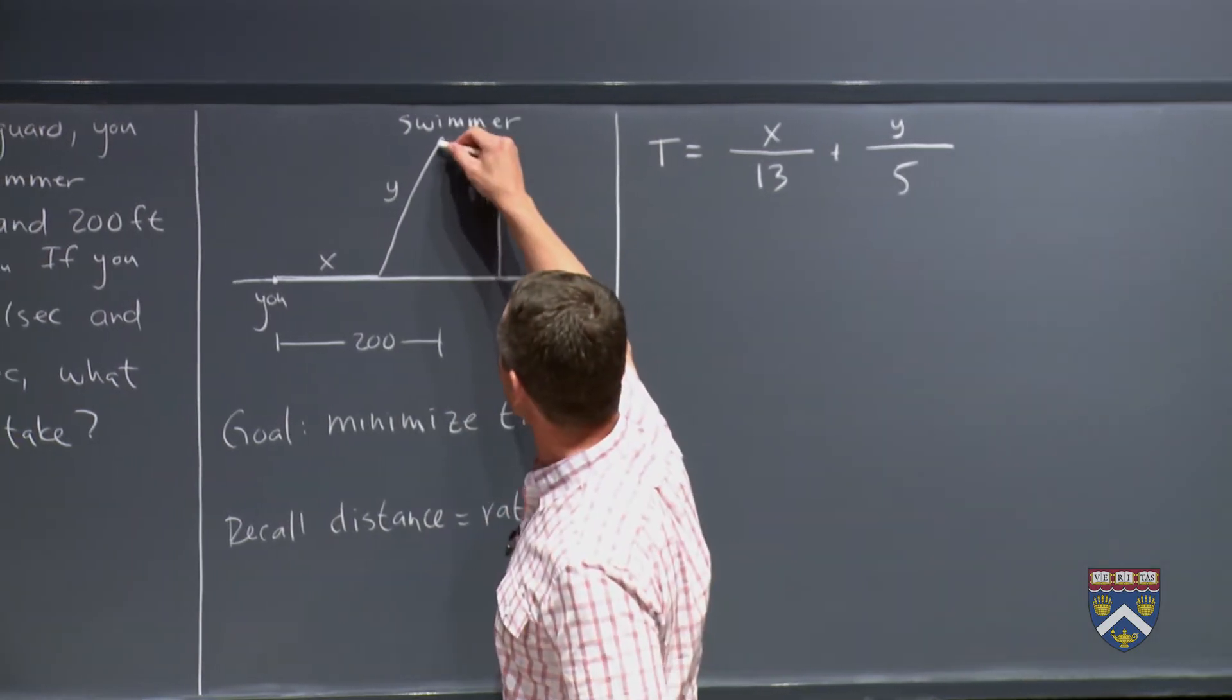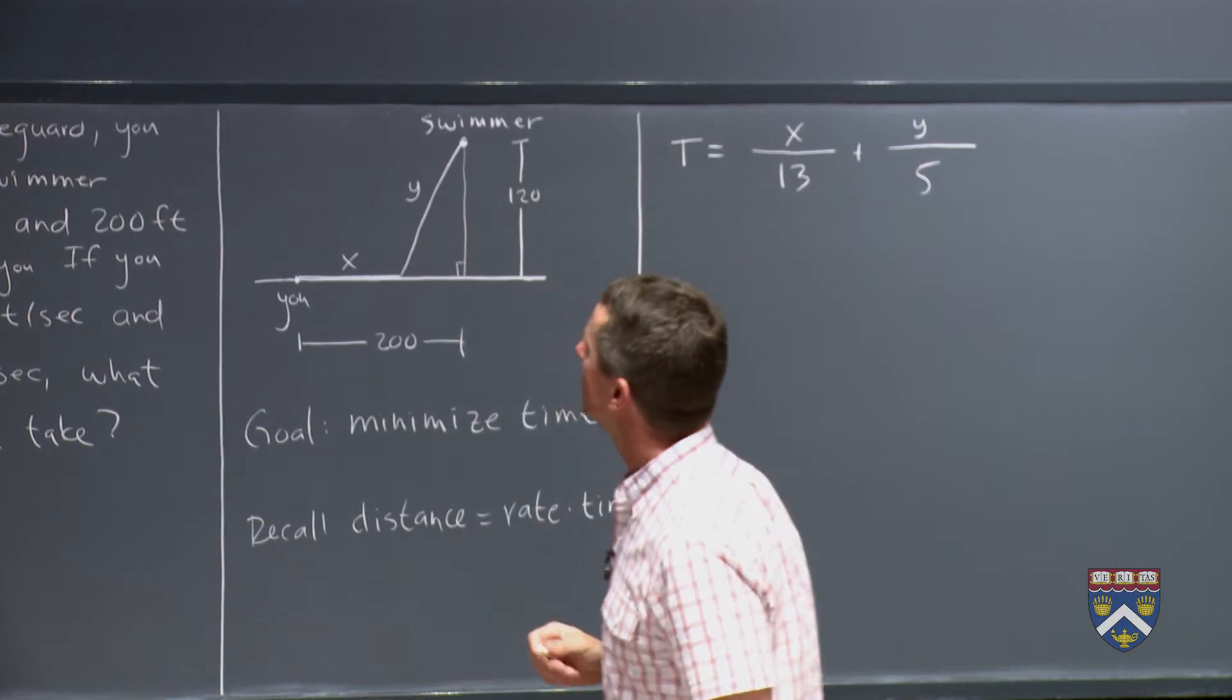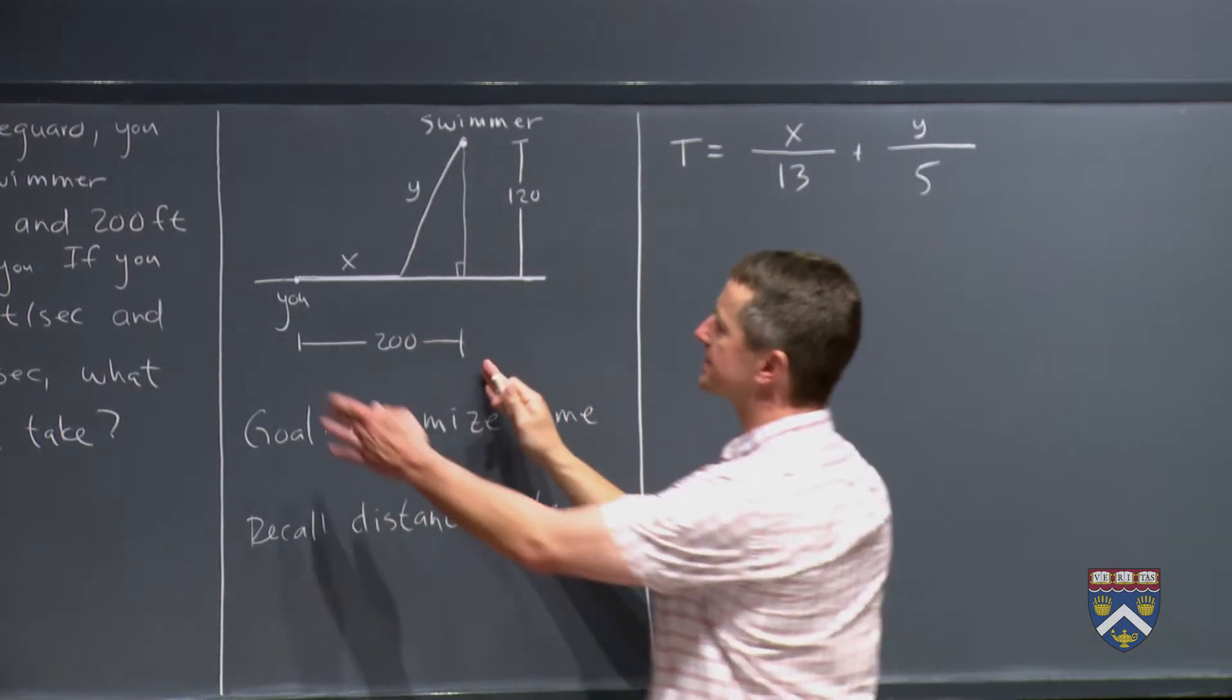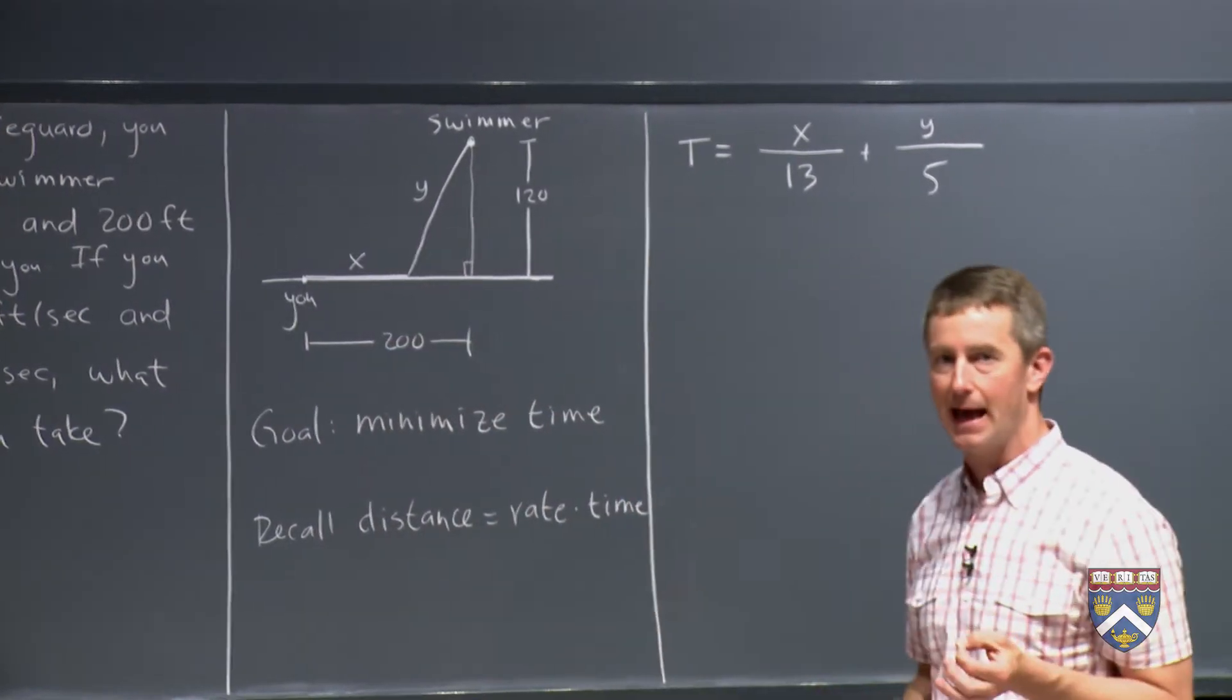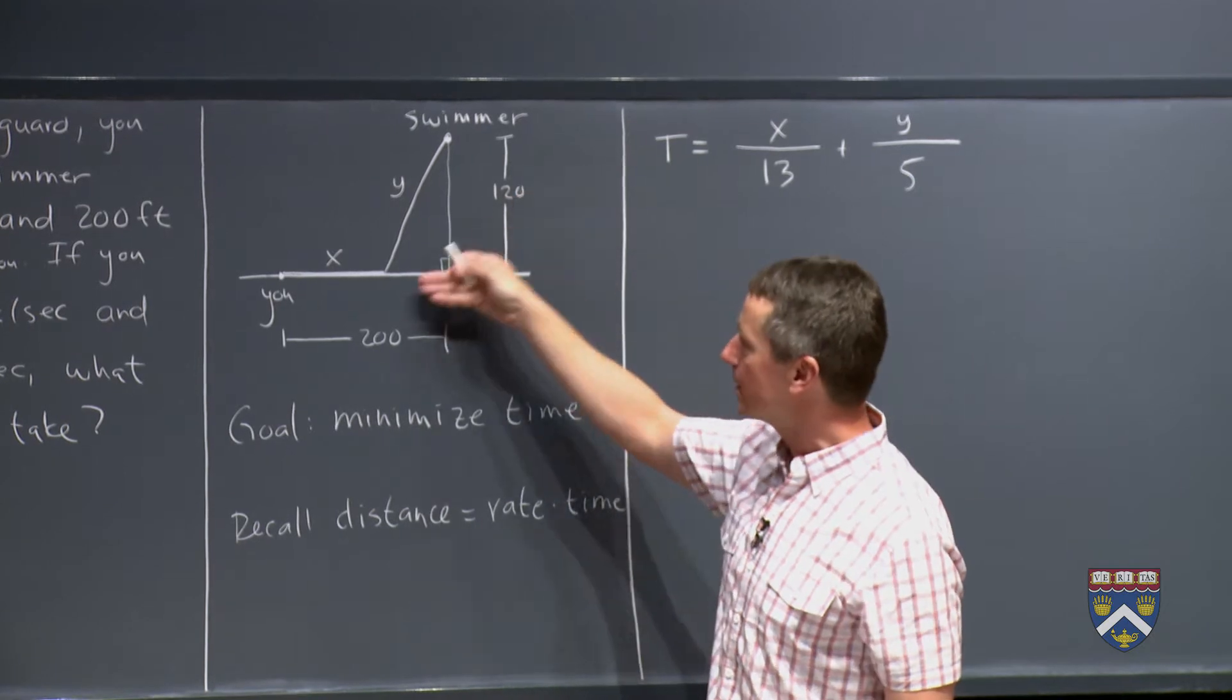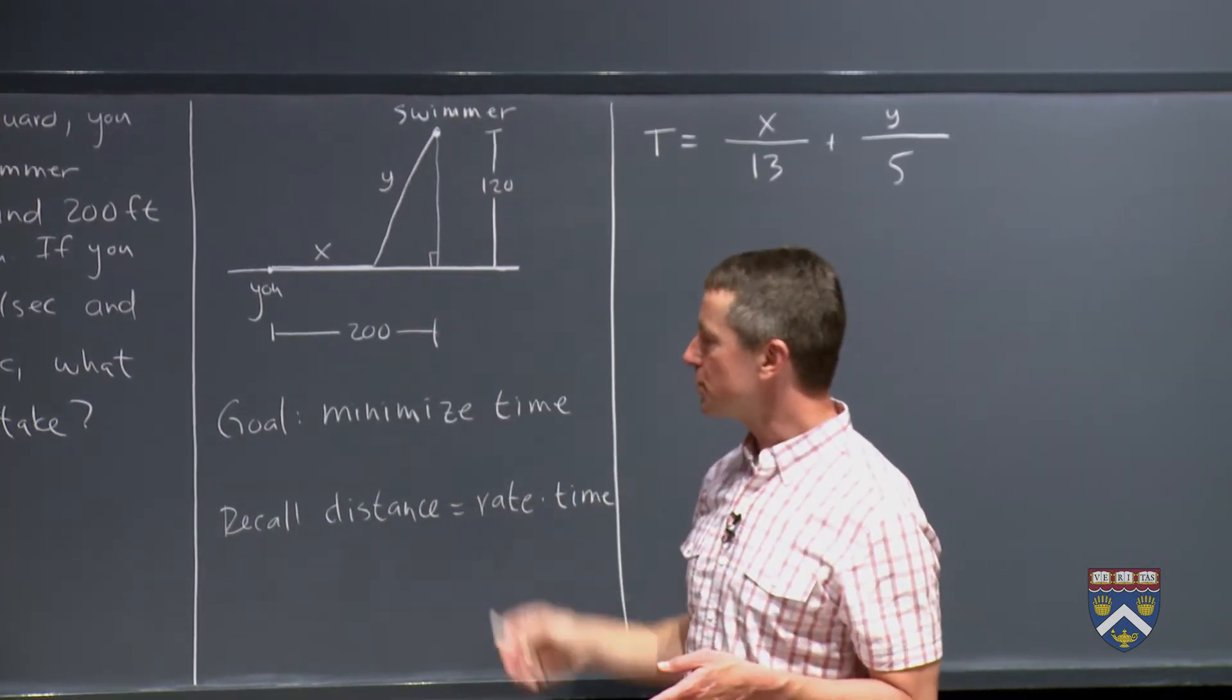And the answer is the Pythagorean theorem. Because if we draw a line straight down from there, we get a right triangle here. And if this distance is x, what would this distance be? The whole distance here is 200. So this short distance here would be 200 minus x. And we could solve for y, it would be the square root of 120 squared plus this distance squared.